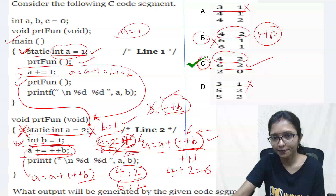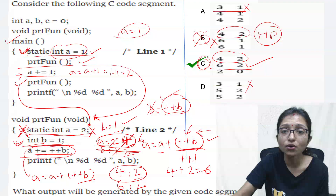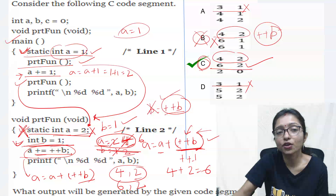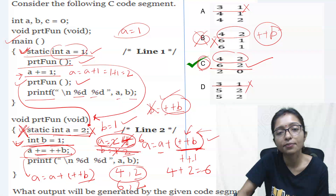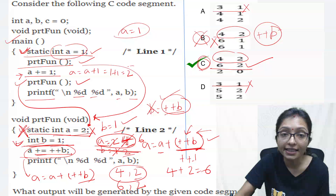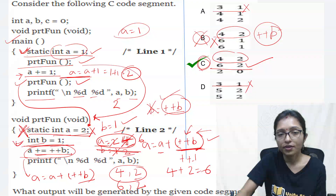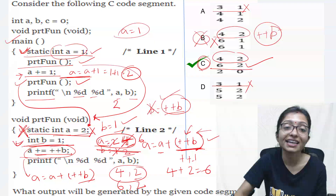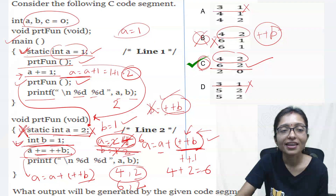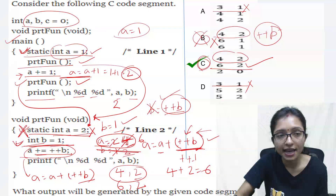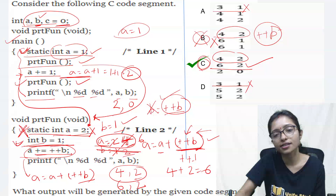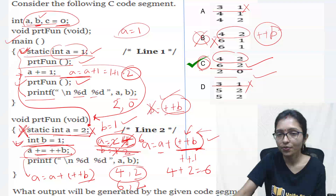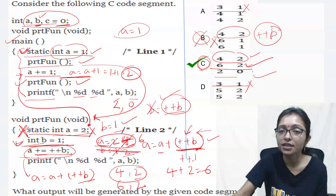Now finally in main, you are printing printf with %d %d a b. Which a? That is main's a, which was updated to 2. And which b? There is no b declared locally in main, so it takes the global b. The global b was initialized to 0. So this prints 2 and 0. That is why the ultimate answer is: 4 2, then 6 2, then 2 and 0, which is option C.